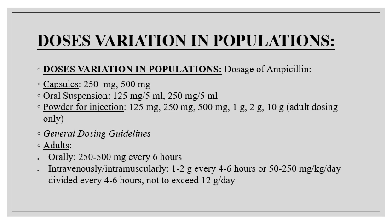Regarding dose variation in population: ampicillin is available in capsules of 250 mg and 500 mg. Oral suspension is available in two doses: 125 mg per 5 ml or 250 mg per 5 ml. Powder for injection is also available. General dosing guidelines for adults: orally, 250 to 500 mg every six hours; IV, 1 to 2 grams every four to six hours.